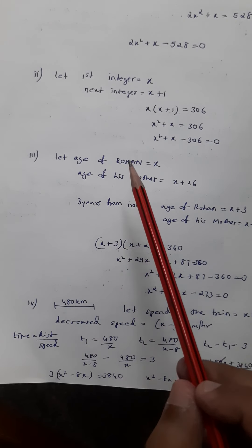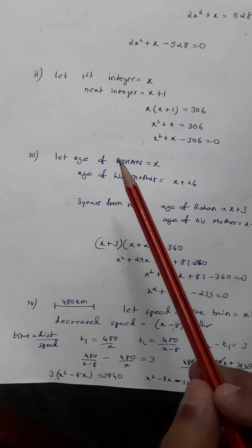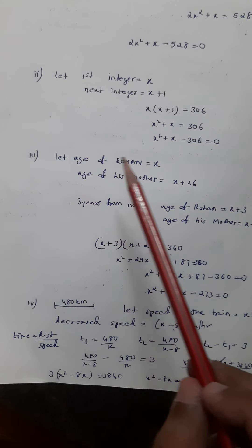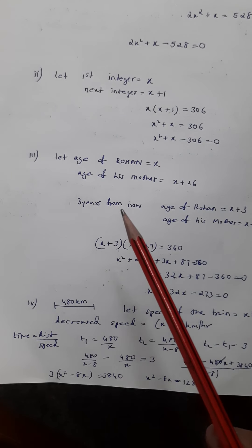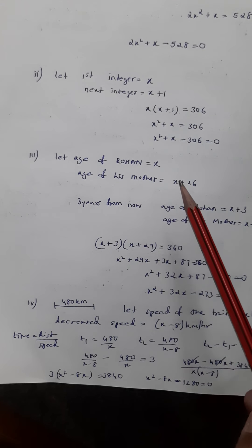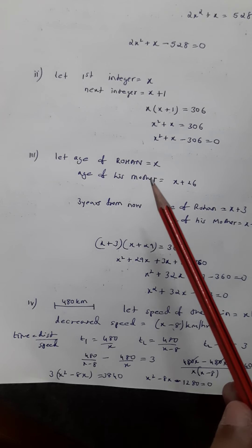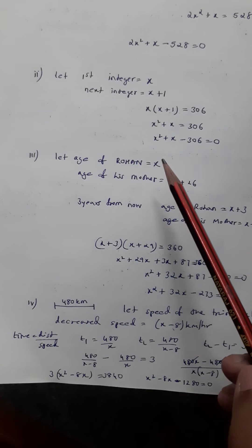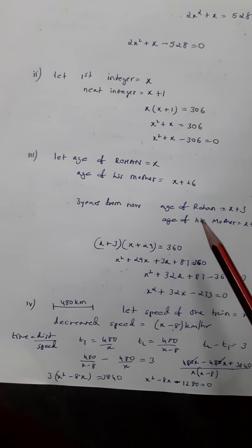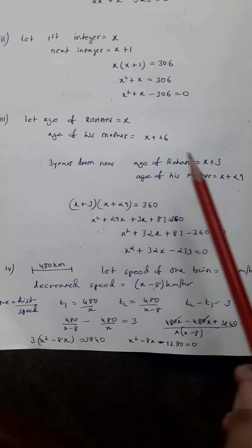In the third one, there are two people: Rohan and his mother. The age of the mother is 26 more than Rohan's. So if the age of Rohan is x, the age of his mother is x plus 26. Three years from now — meaning after three years — we add three to both their ages. So Rohan's age will be x plus three and his mother's age will be x plus 29.